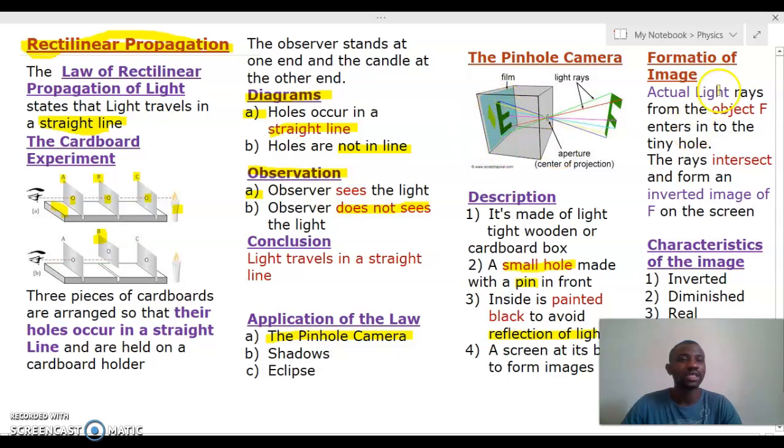Now, formation of image. First, I must emphasize that an image is formed when light rays intersect or they meet. If the light rays that are intersecting are actual light rays, normally actual light rays in diagrams, as you can see in this very diagram, we use continuous lines to represent actual rays. If they were virtual, then we use broken lines. So actual light rays intersect to form real images, and that is what we have here.